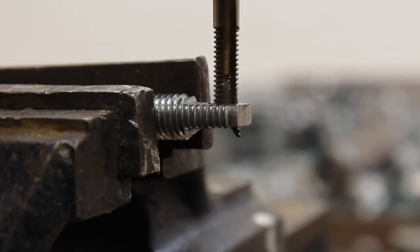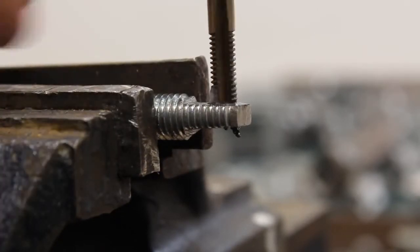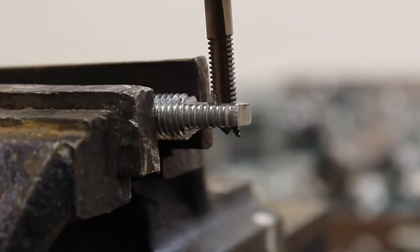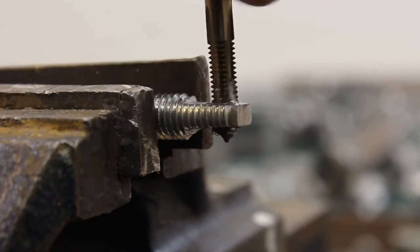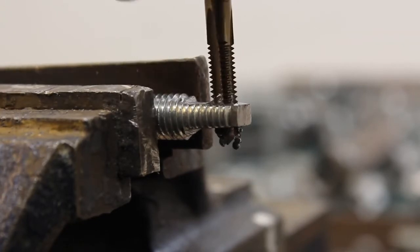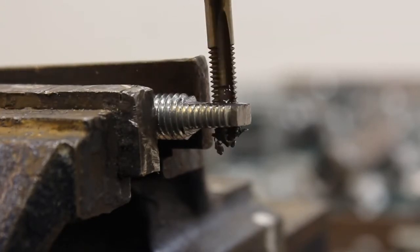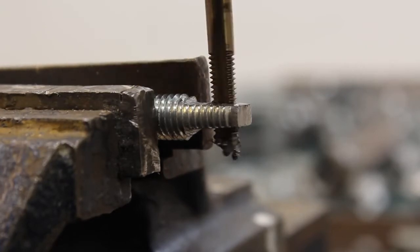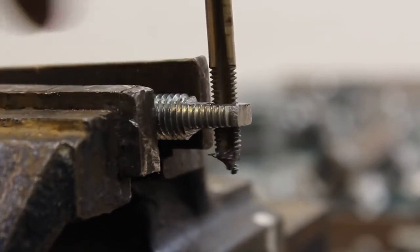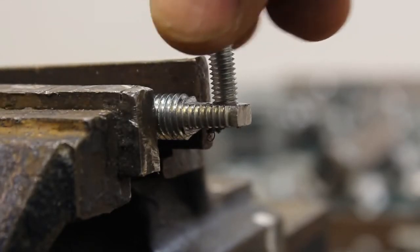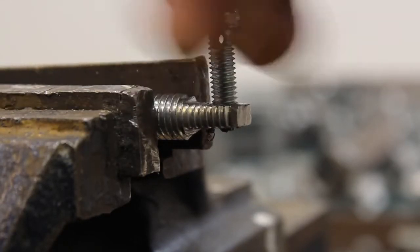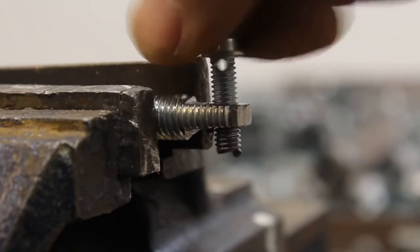The second run is done with the intermediate tab, marked with two rings at the shaft, and finally the third run is done with the tapper tab, usually marked with no ring, sometimes with three rings at the shaft. Now a 6mm bolt should easily fit into the hole.